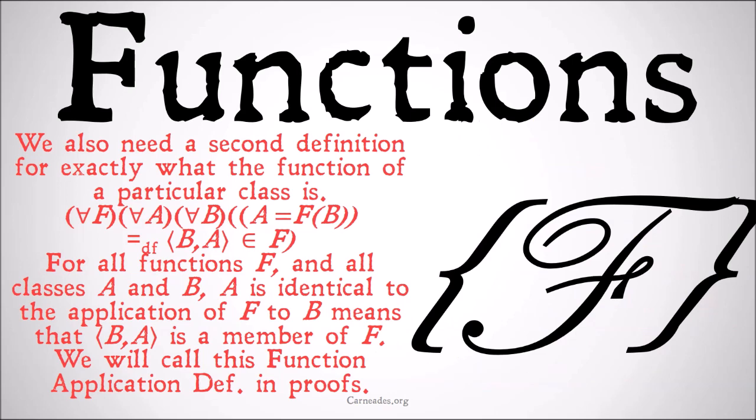We also need a second definition for exactly what a function of a particular class is. For all f, for all a, for all b, a is equal to f(b) means by definition that (b,a) is a member of f. So, if we want to say f(b) equals a, or the function f applied to b is a, that means that one of the members of f is the ordered pair (b,a). We'll call this 'function application definition' in proofs.